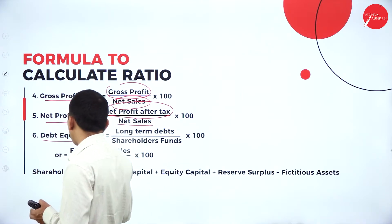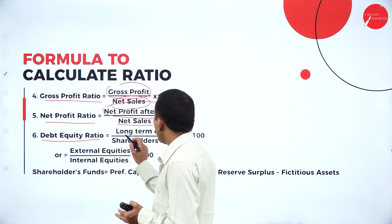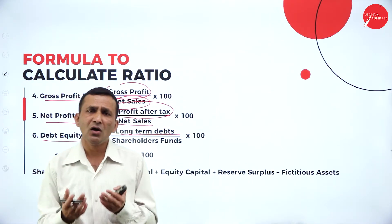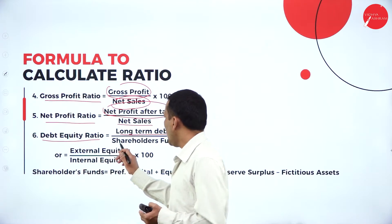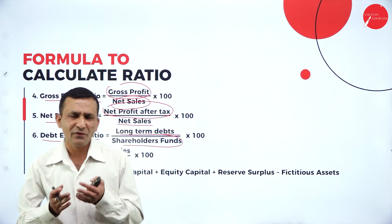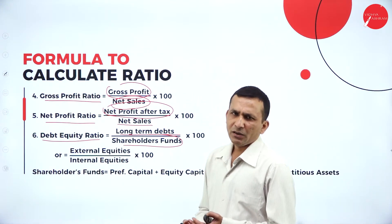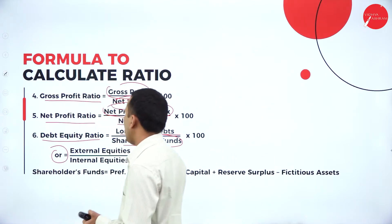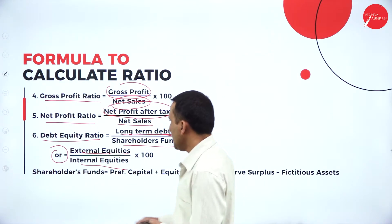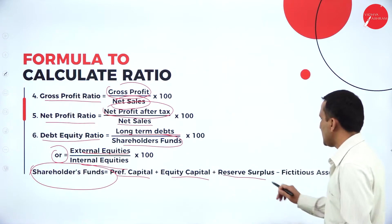Moving to debt-equity ratio, which falls under the solvency category. It is long-term debt — examples include debentures, 10% debentures, and long-term loans — divided by shareholders' fund. Shareholders' fund includes equity shares, preference shares, profit and loss account, and reserves and surplus. Alternatively, you can use external equity divided by internal equity into 100.